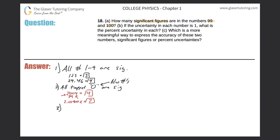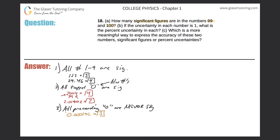Rule number three: all preceding zeros are never significant. So a value like 0.000196 has only three significant figures. The preceding zeros — meaning zeros that lie to the left of numbers, without any numbers to the left of those zeros — are never significant. If you placed a one to the left of those zeros, they would become significant, but without a number to the left of them, they're never significant.